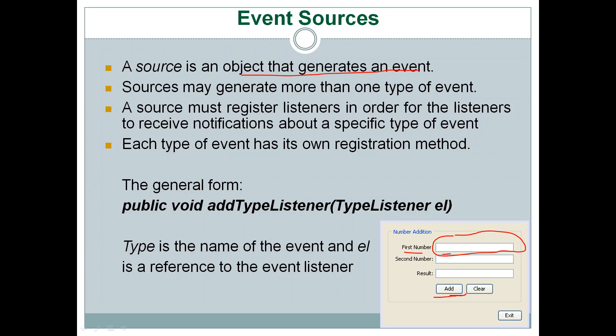Most GUI components can be termed as sources. For example, a text field generates events, so a text field is a source. A button is a source. There are other components like list boxes and drop-down boxes — all GUI components that generate events are said to be sources. A single source may generate more than one type of event. For example, clicking on a button generates an action event, while moving the mouse over it generates a mouse motion event.